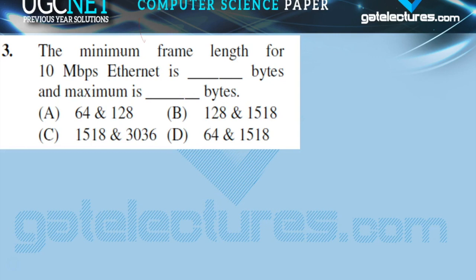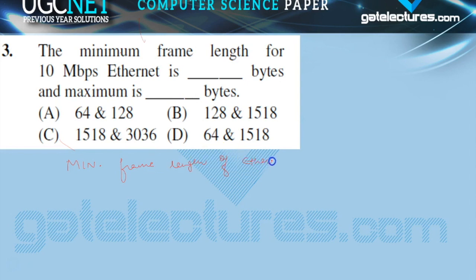The next question is: the minimum frame length for 10 Mbps Ethernet is, and the maximum length in bytes. The minimum frame length of Ethernet 802.3 is 64 bytes.